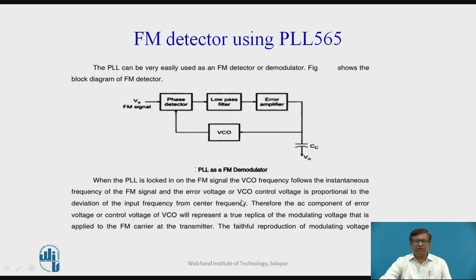The error voltage, or VCO control voltage, is proportional to the deviation of the input frequency from the center frequency. Therefore, the AC component of the error voltage will represent a true replica of the modulating voltage applied to the FM carrier at the time of modulation. After passing through the low pass filter and error amplifier, we get the pure signal varying depending upon the variation in the input frequency — that is the FM demodulated signal.